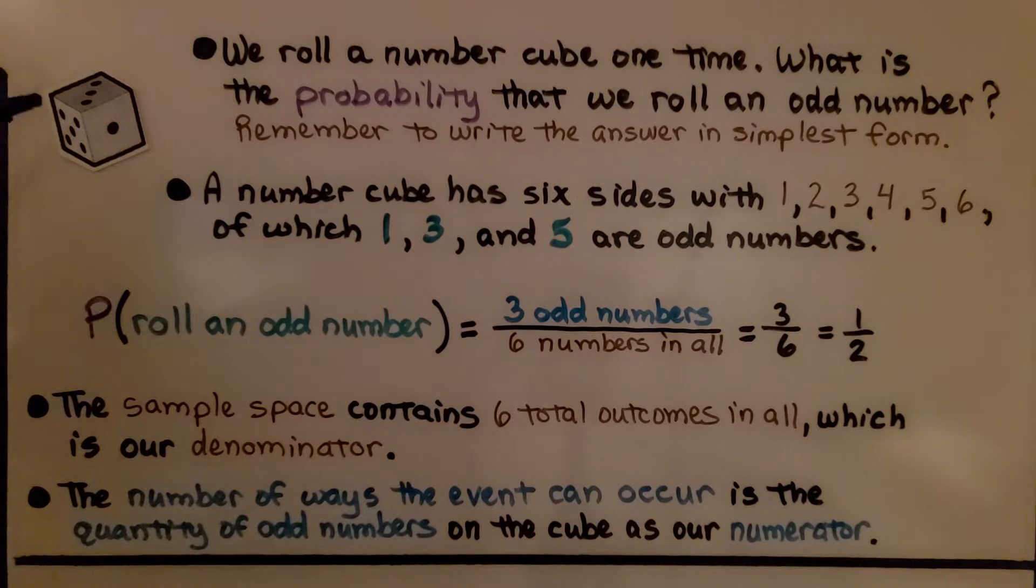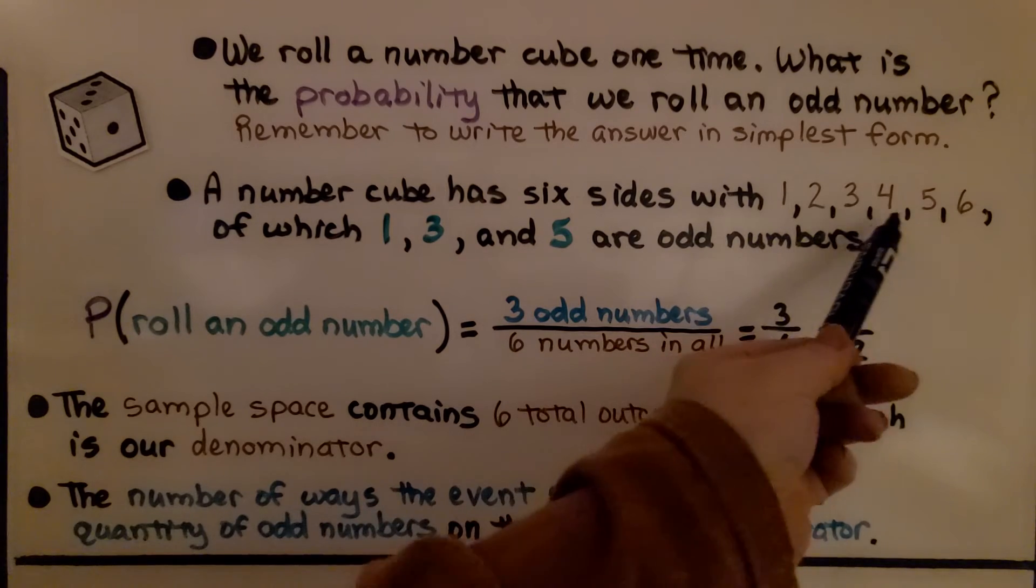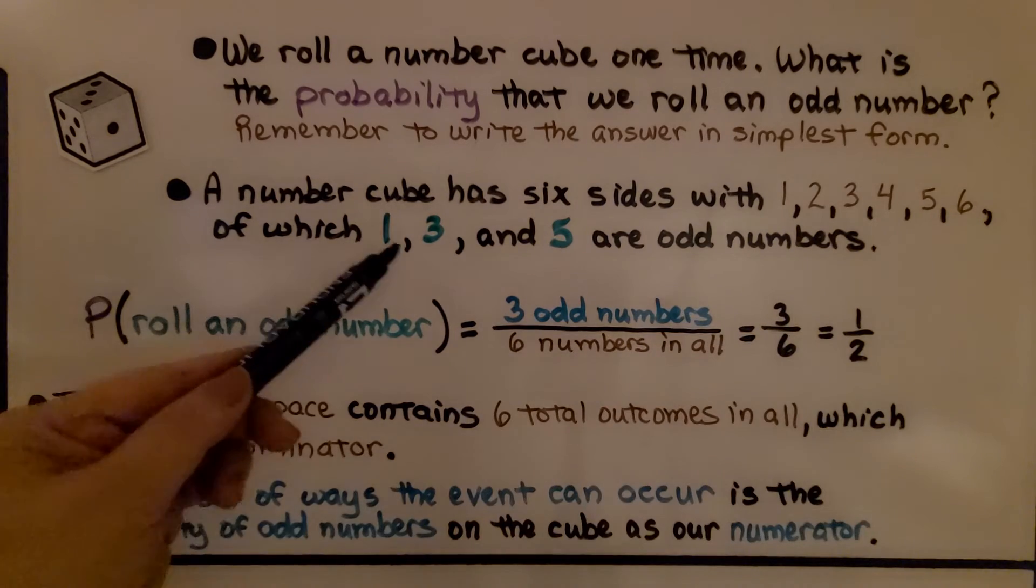So here we have a number cube. And we roll a number cube one time. What is the probability that we roll an odd number? Remember to write the answer in simplest form. Well, a number cube has six sides with one, two, three, four, five, six, of which one, three, and five are odd numbers.